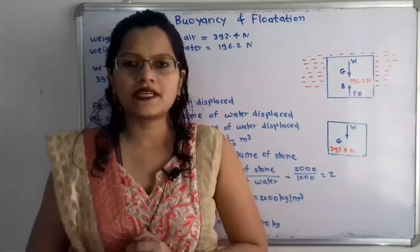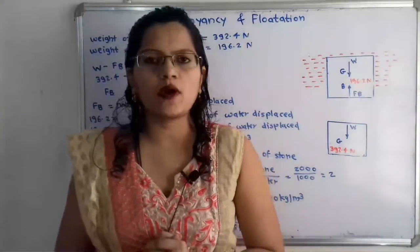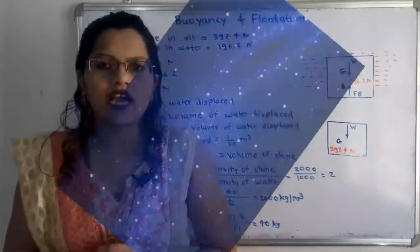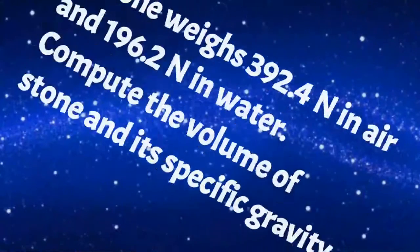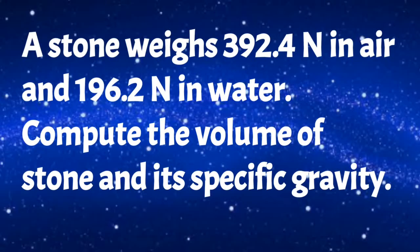Hello friends, this is Priyanka. Today we are going to solve a problem on buoyancy and flotation. The given problem is: a stone weighs 392.4 N in air and 196.2 N in water. Compute the volume of the stone and its specific gravity.